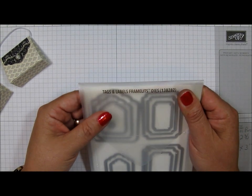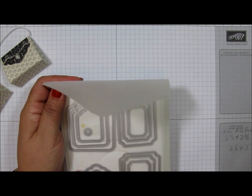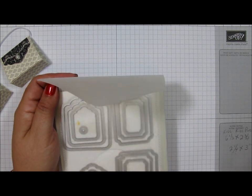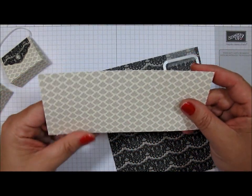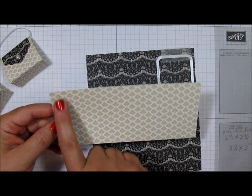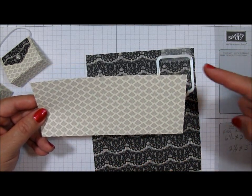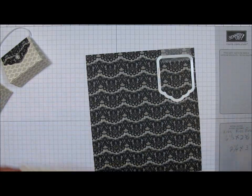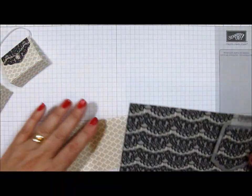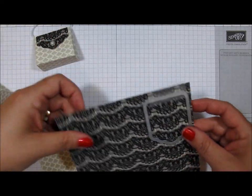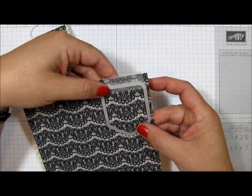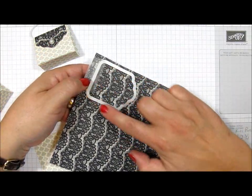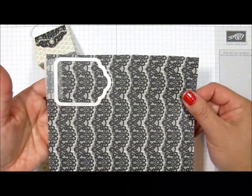And I am making use of the Tags and Labels Framelits dies, and I'm going to be using the second to the largest of the tags. And what you're going to need is a piece of paper. I'm using some DSP from the Timeless Elegance Collection, and this measures six and a half inches by two and three quarters of an inch. And all I need for this part of the purse is this tag, and you really only need about two and a quarter by three inches, not even that much. And the reason I'm using that much is because I want to follow a pattern that's on this Timeless Elegance paper. See how pretty that lace looks?